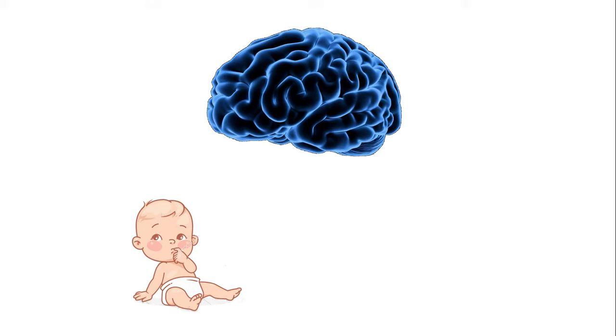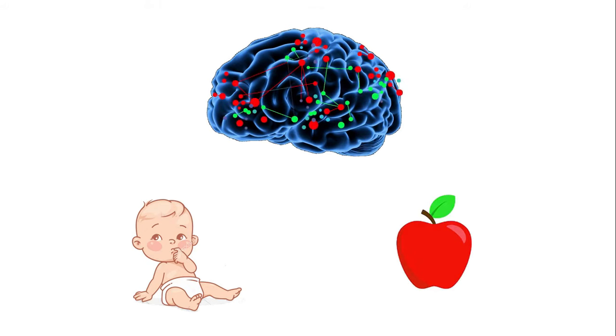At first, it does not know about any kind of fruit, but if he sees an image of a fruit, let's say apple, for a certain number of times, its brain starts forming patterns inside, which helps to recognize the apple next time he sees it.